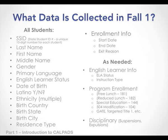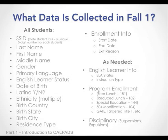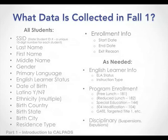So what data is collected in the first period, Fall 1? For all students, their name and general demographic information is collected, including ELA status, primary language, where they were born — all of that is captured. It also requires each student to have a unique 10-digit SSID, or state student ID number. It also captures enrollment information, such as who's attending what school and when they've exited and returned. And as needed, it captures English learner information and whether students are enrolled in any state or federal programs.